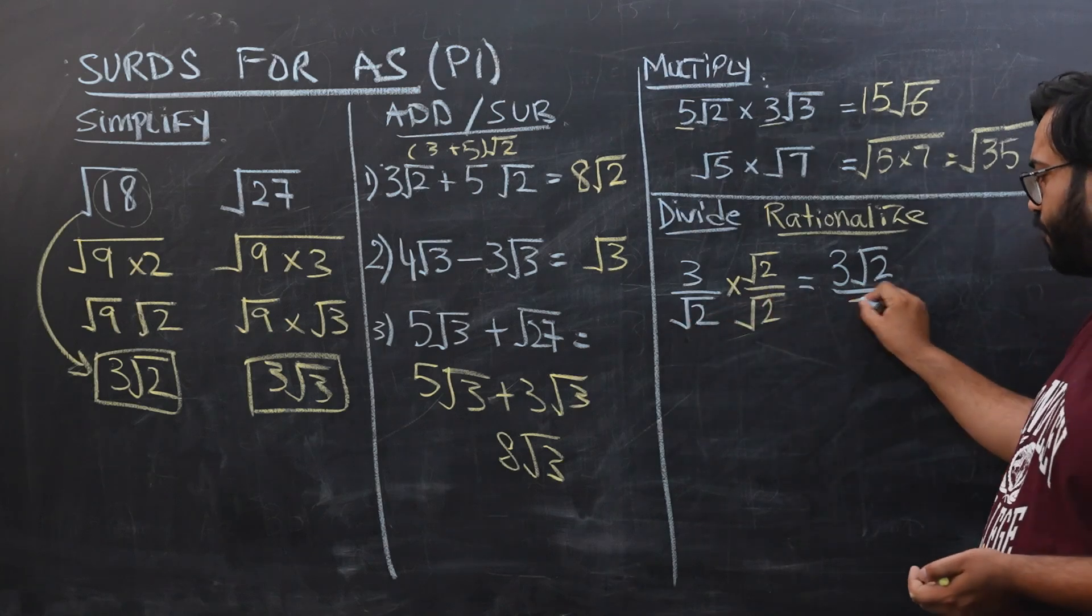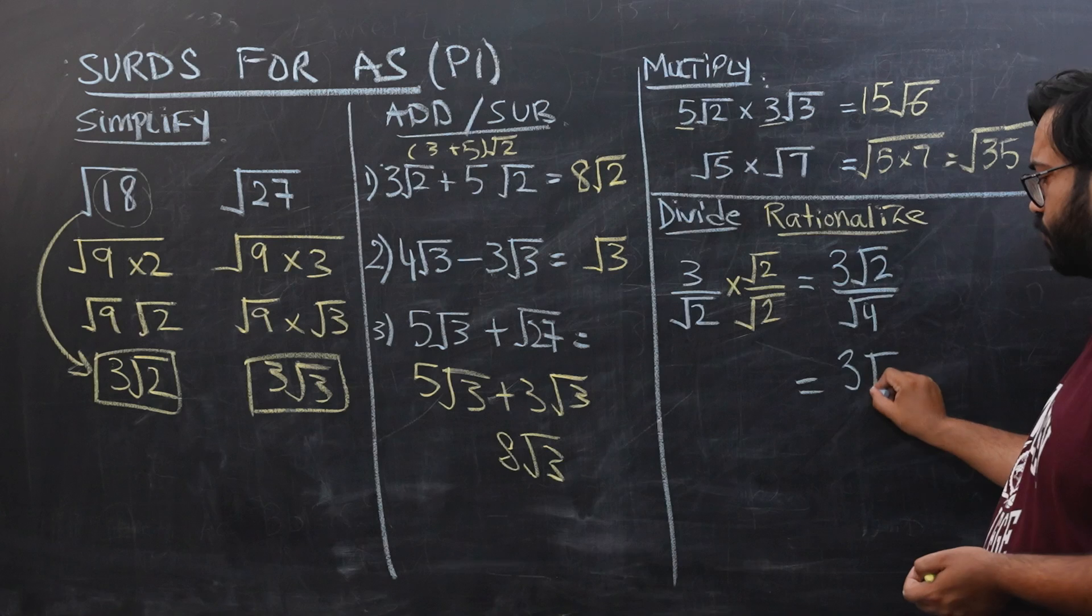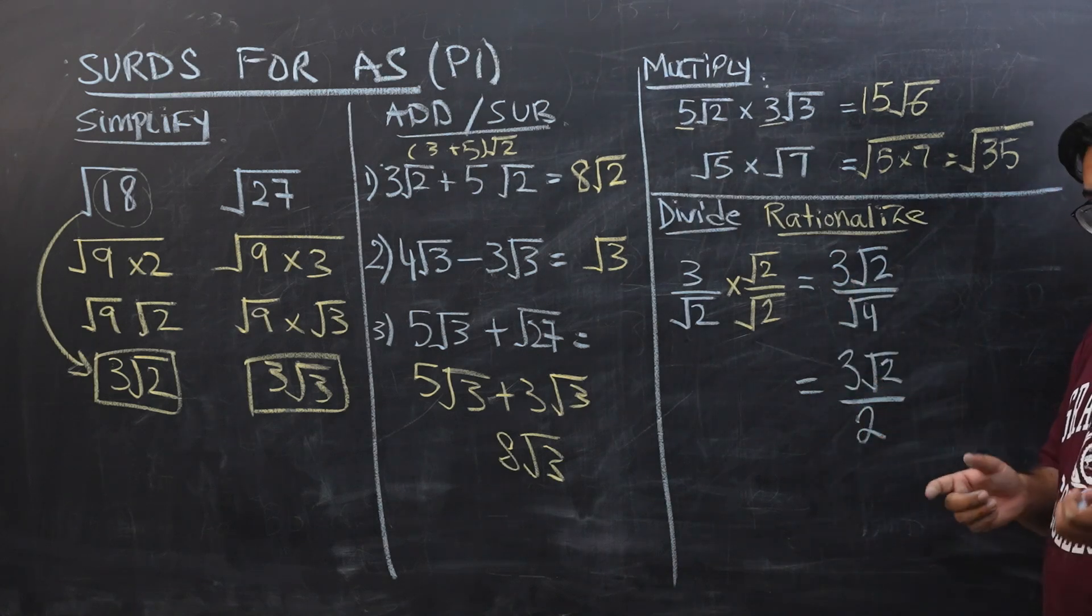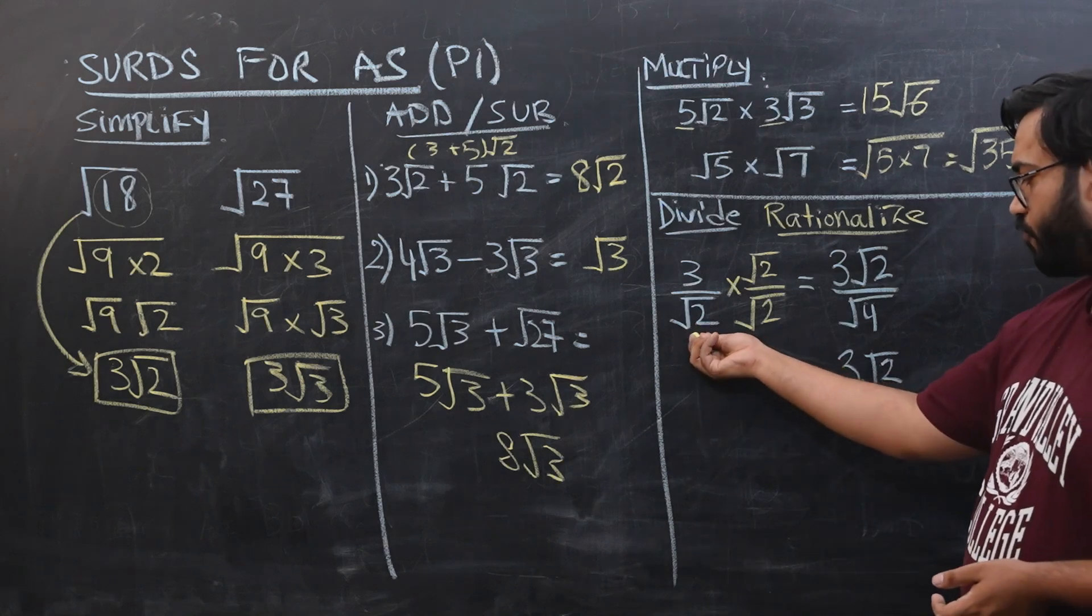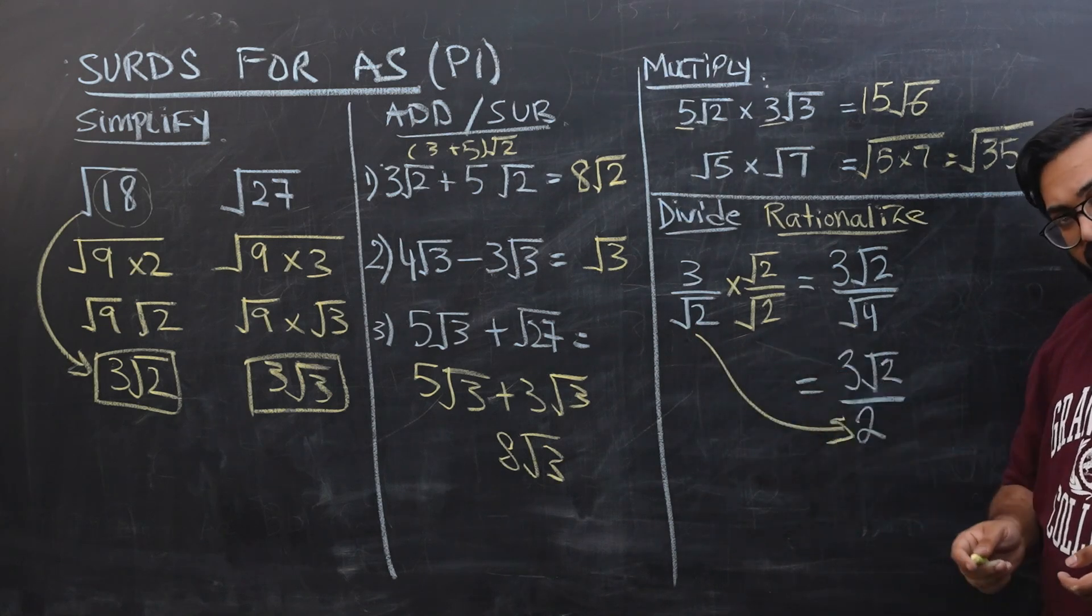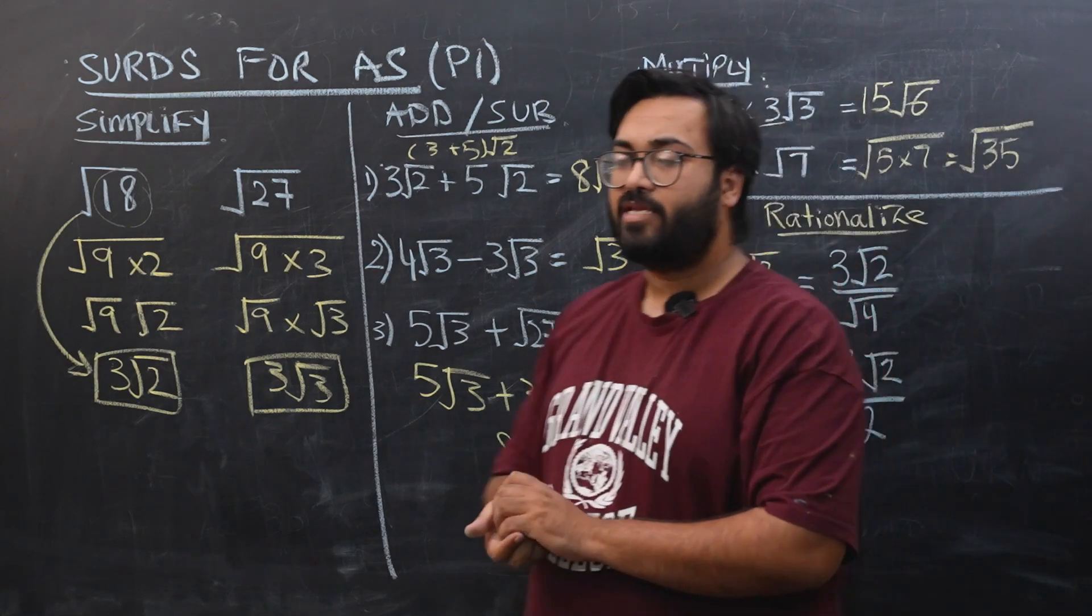And now we have 3 square root 2 over square root of 4 would become 2. And this process to bring the square root from denominator to numerator without making the powers negative is called rationalization. So at many times they would say that you would be having an answer in the denominator with a square root.